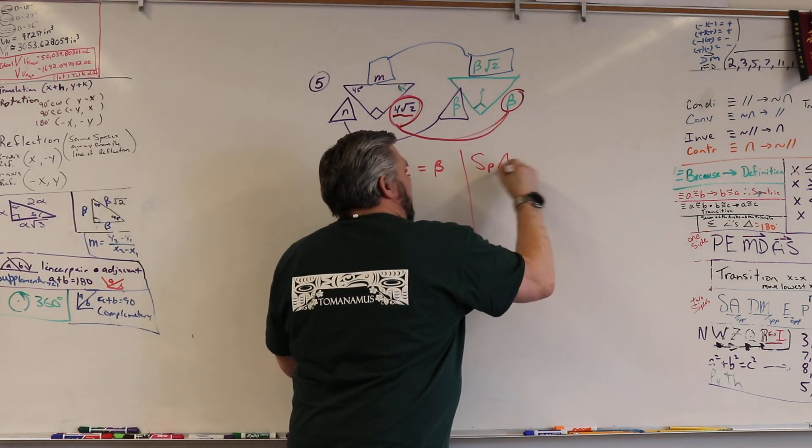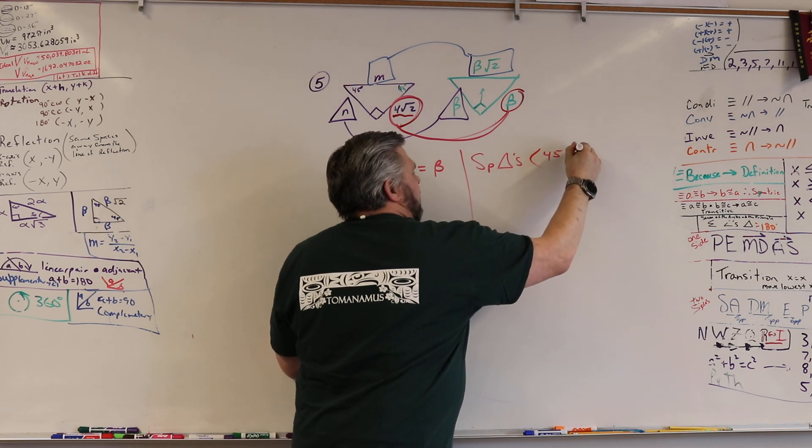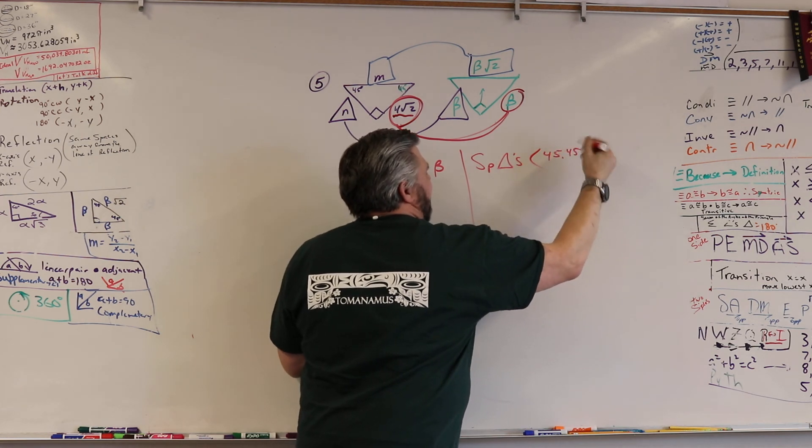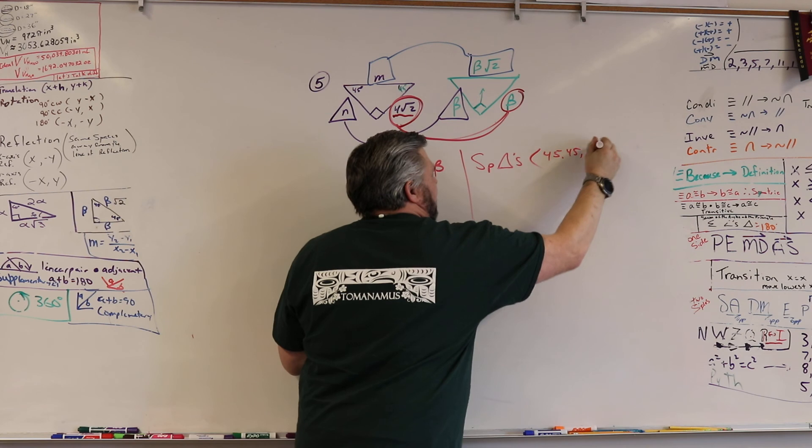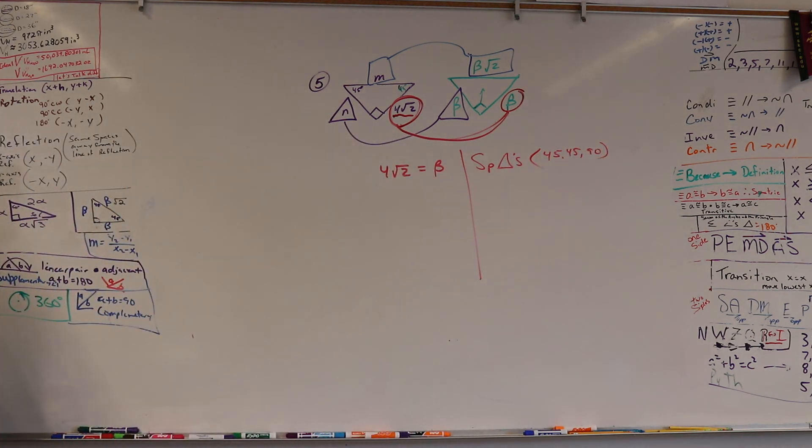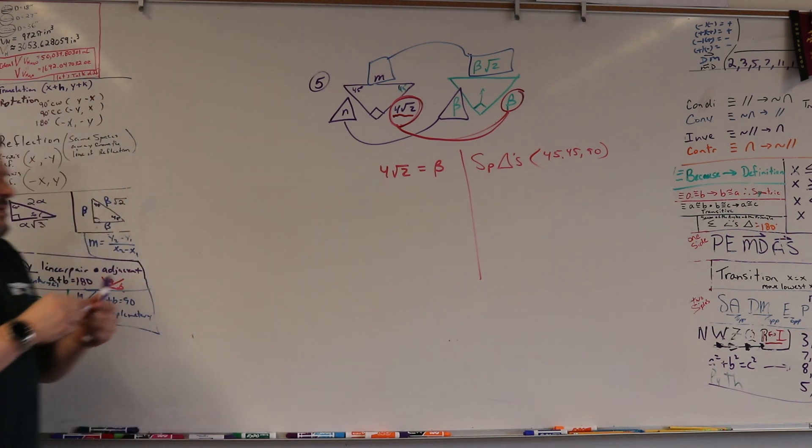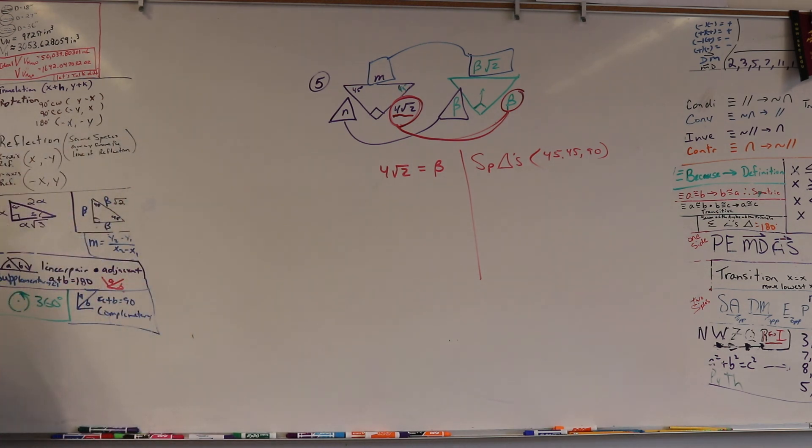Special. These are special triangles. SP triangles. So SP triangles, right? Special, but what kind? 45-45-90. There you go. This is like one of the second or third time we use this. This one's a 45-45-90. We usually use the 30-60-90, right? This is a 45-45-90.